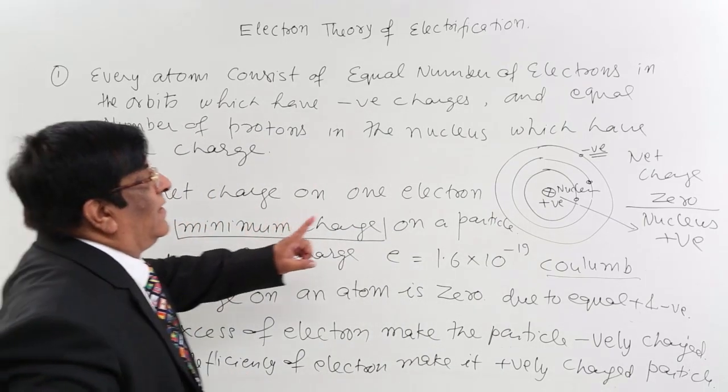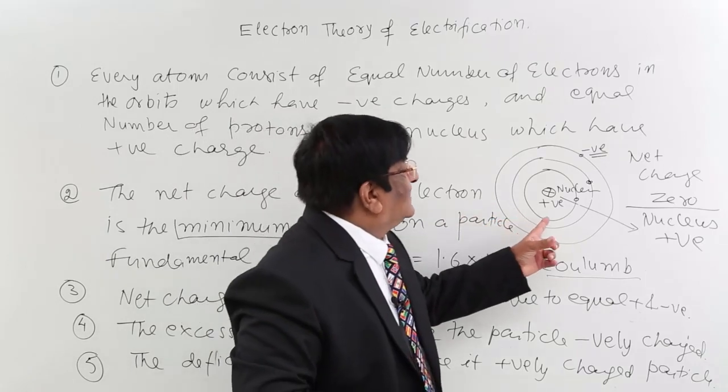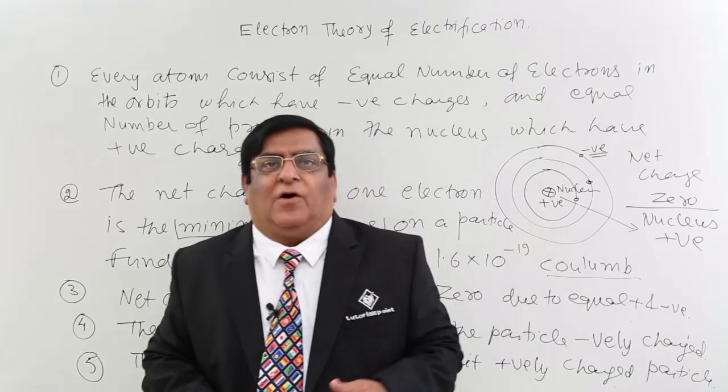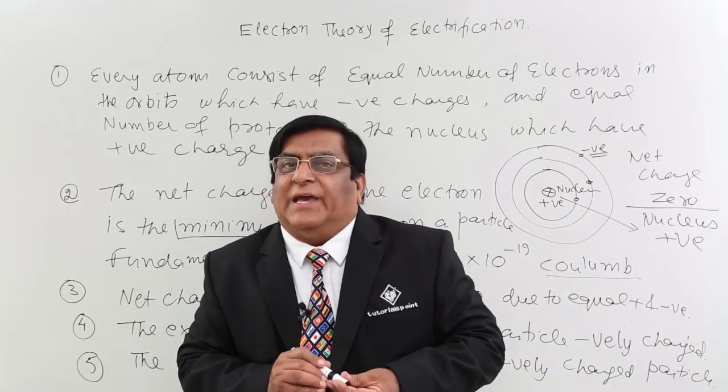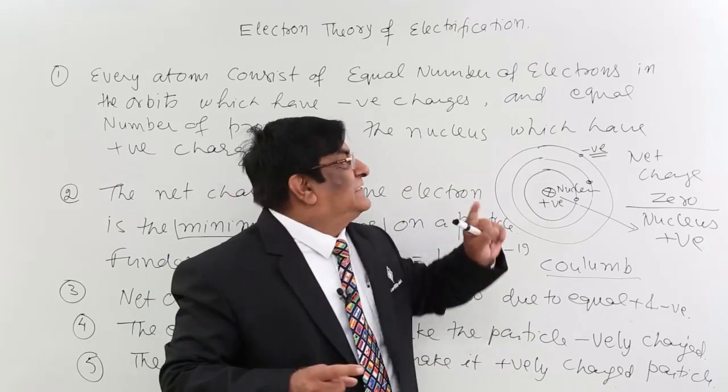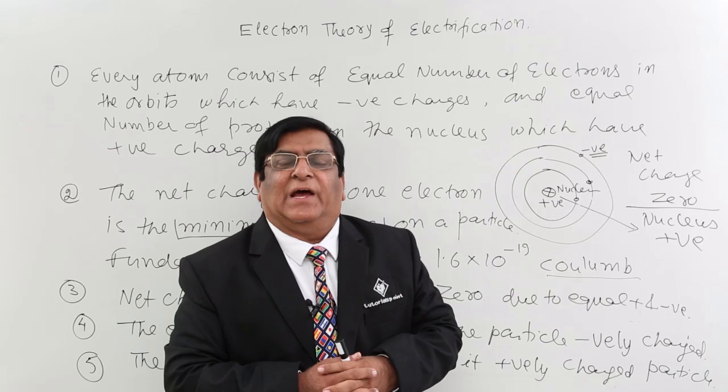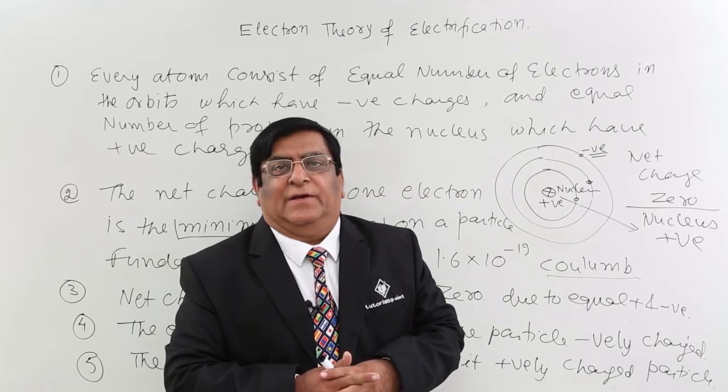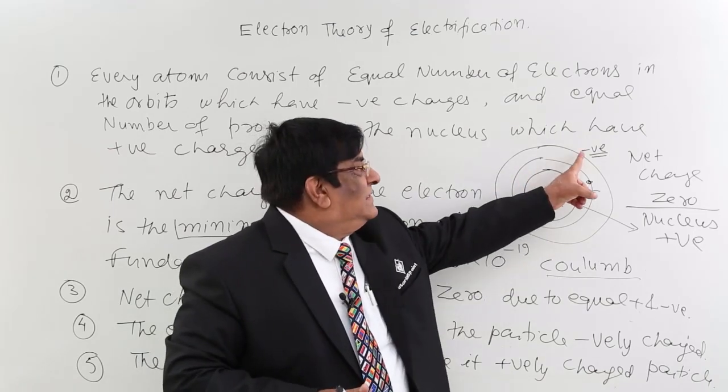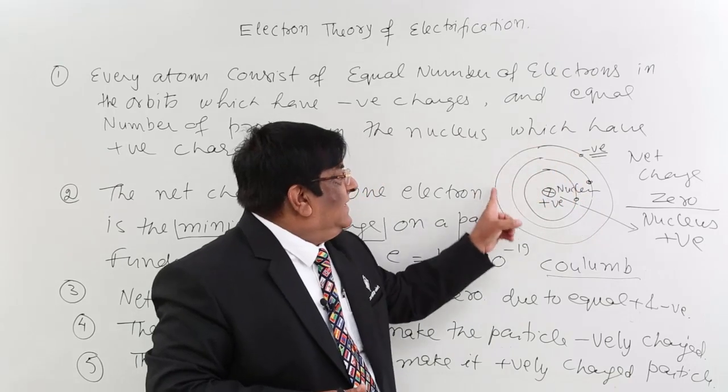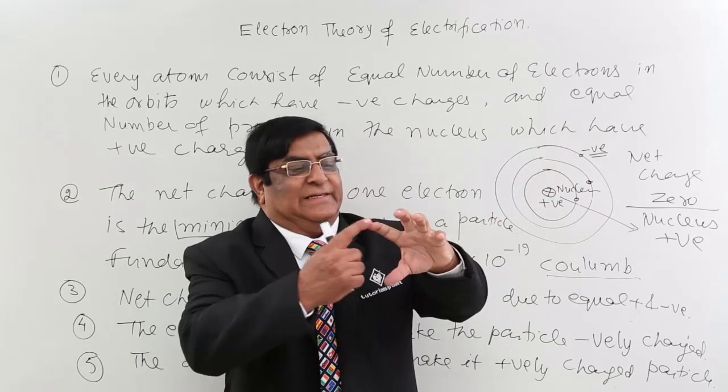Now whenever there is a process of rubbing or any other process, we have an exchange of electron. How this exchange happens and how this does not happen? If I take this, there is a lot of space between electrons like this.